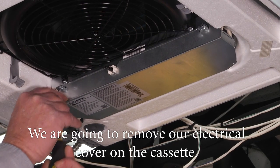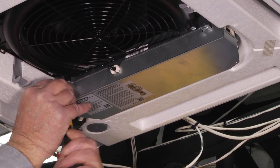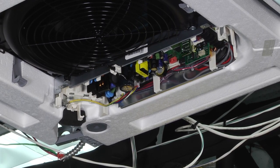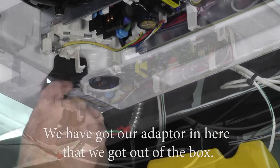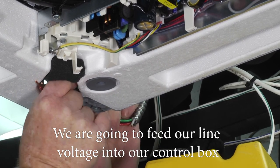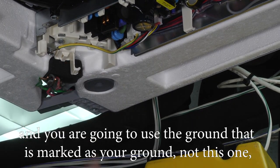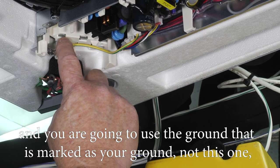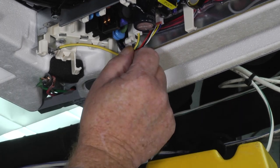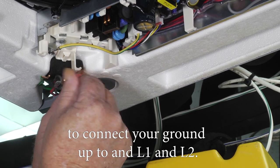Now we're going to do our electrical. We're going to remove our electrical cover on the cassette. There's two screws to give you access to your control wiring. We've got our adapter that we got out of the box. We're going to feed our line voltage into our control box and that's going to connect to your L1, L2, and you're going to use the ground that's marked as your ground, not this one. This is the ground for our control box. Make sure you use the other grounding screw to connect your ground up to L1 and L2.